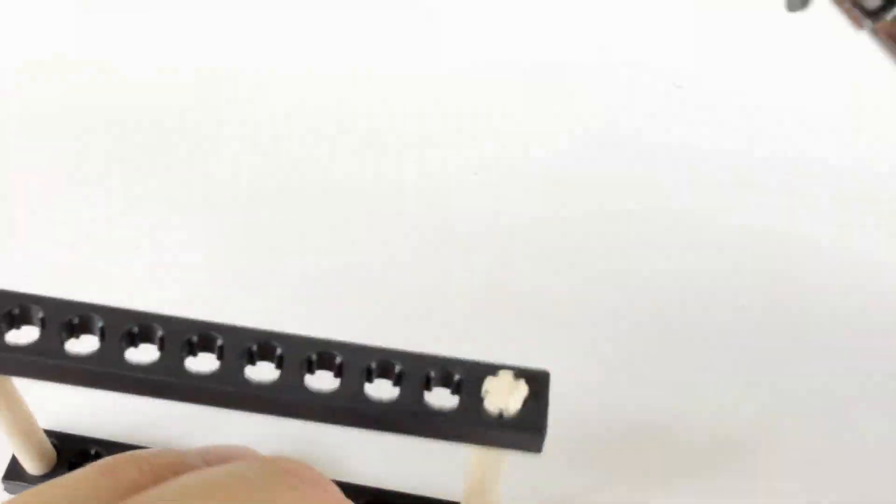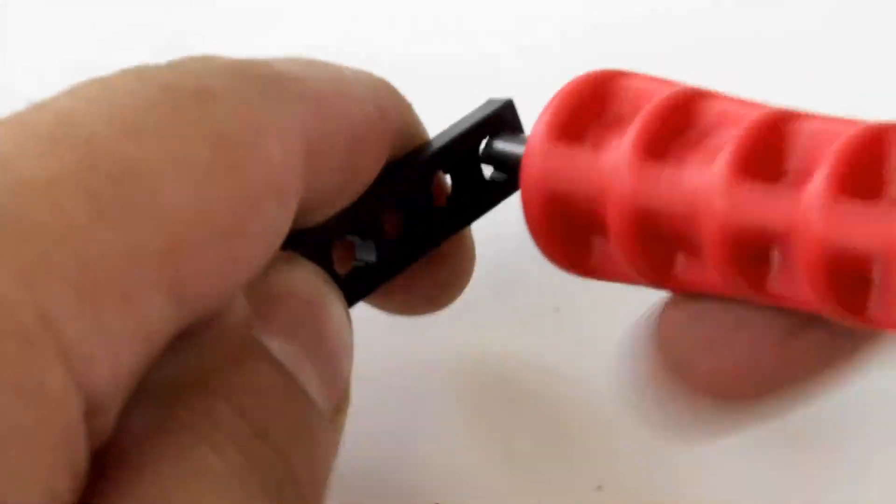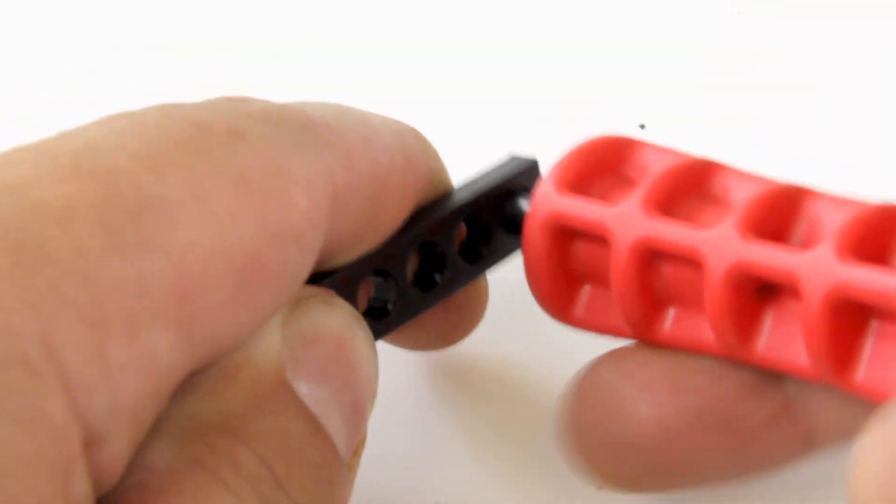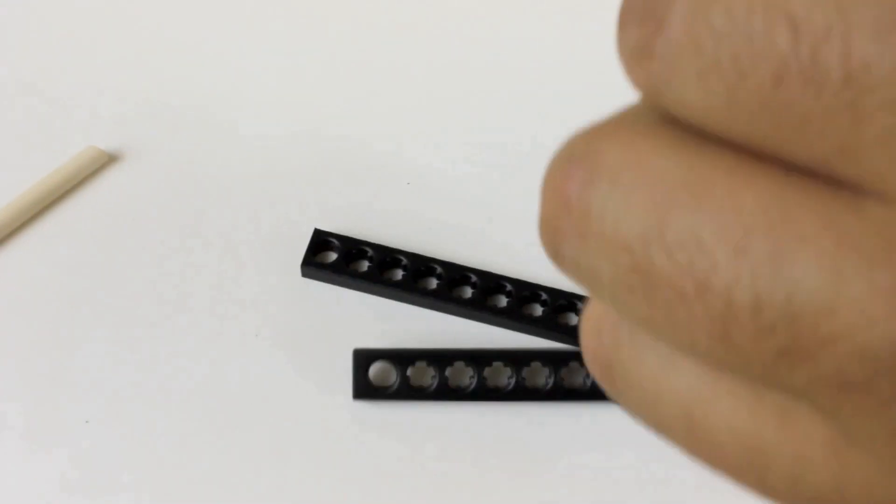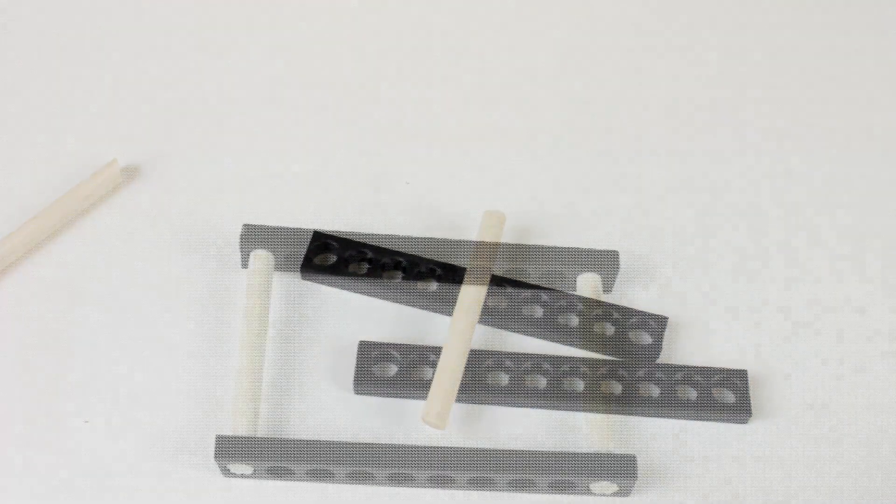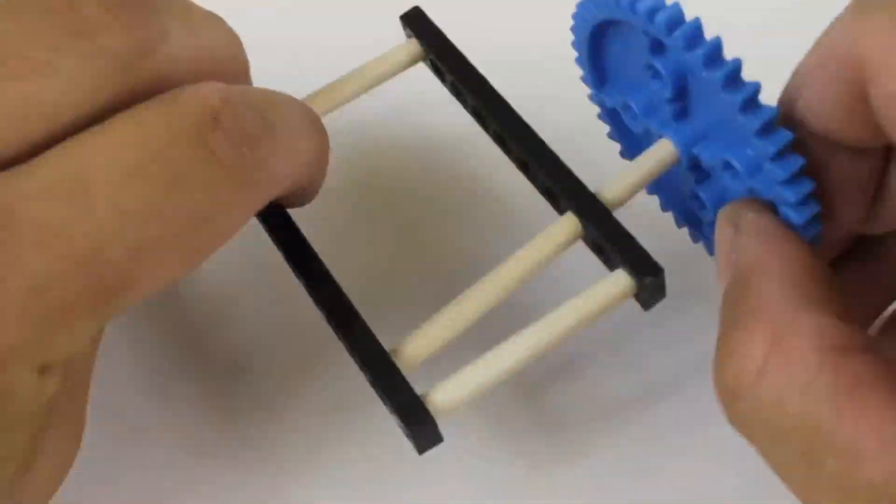Most of our TeacherGeek components come with holes that dowels just press into. Just twist the reamer back and forth to ream out a hole. Reaming out a hole will make it so it no longer holds a dowel, so don't ream out holes you want dowels to stay pressed into. Only ream out holes you want dowels to slide or rotate in.